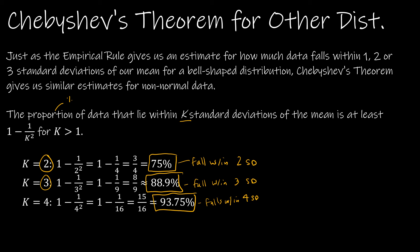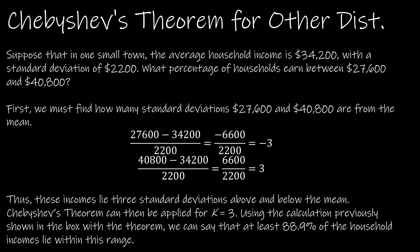But let's take a look at how we might use Chebyshev's theorem. Suppose that in a small town, the average household income is $34,200 with a standard deviation of $2,200. Now, before we do anything, I want us to think about if this were the empirical rule, what our picture would look like. And I'm not going to draw the curve because it's not a normal model. But I'm still going to go ahead and put $34,200 here in the middle.